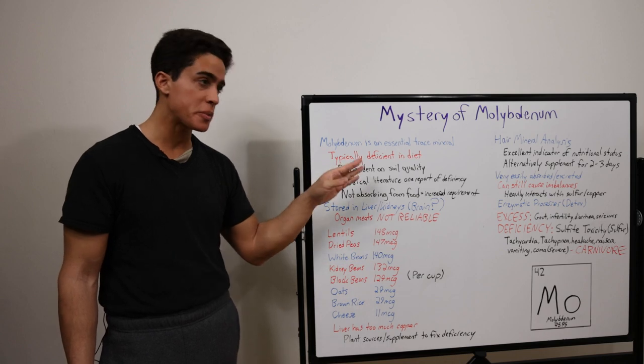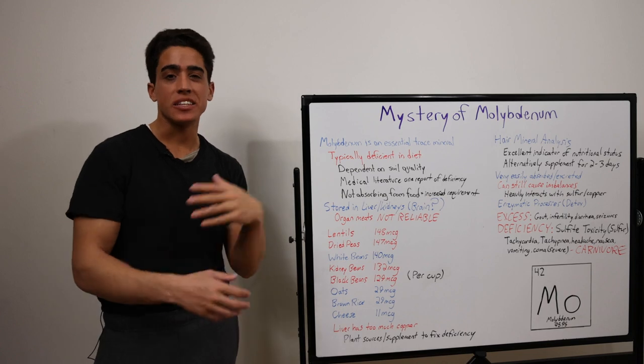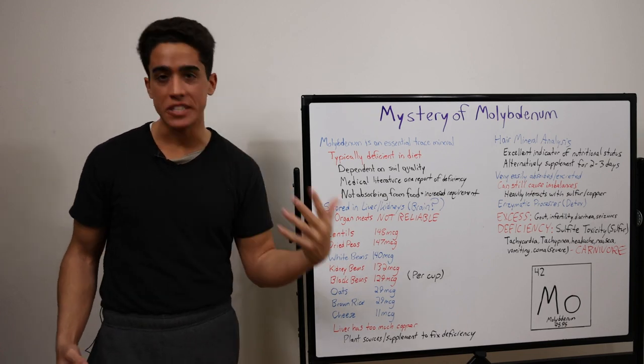So molybdenum's main function is breaking down certain amino acids. And after that, it's needed for fat and carbohydrate metabolism, in addition to helping the liver detox.